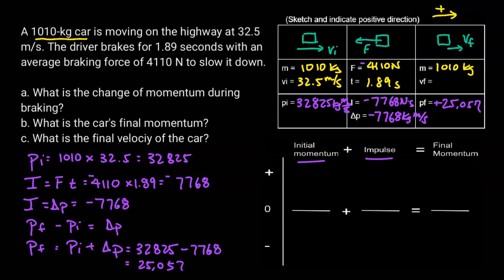And so that's the final momentum — kilograms meters per second. From here, I can calculate the final velocity. The final momentum is M times V final, so VF is just going to be the momentum divided by the mass.